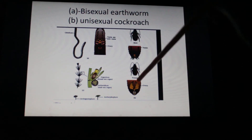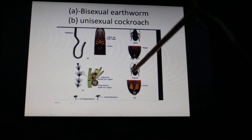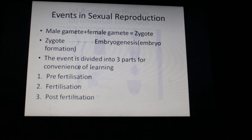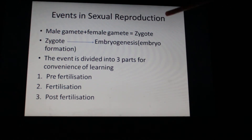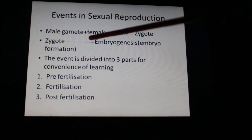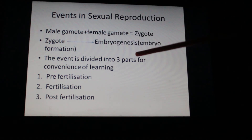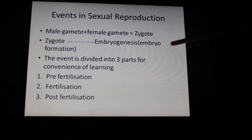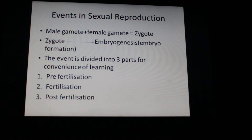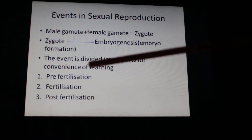In sexual reproduction, male and female organs are born on different individuals. The events of sexual reproduction are: first, male gamete and female gamete fuse to form a zygote. The zygote undergoes embryogenesis, which is embryo formation, and that embryo further grows and matures to form a fully functional individual. This whole event is divided into three parts.